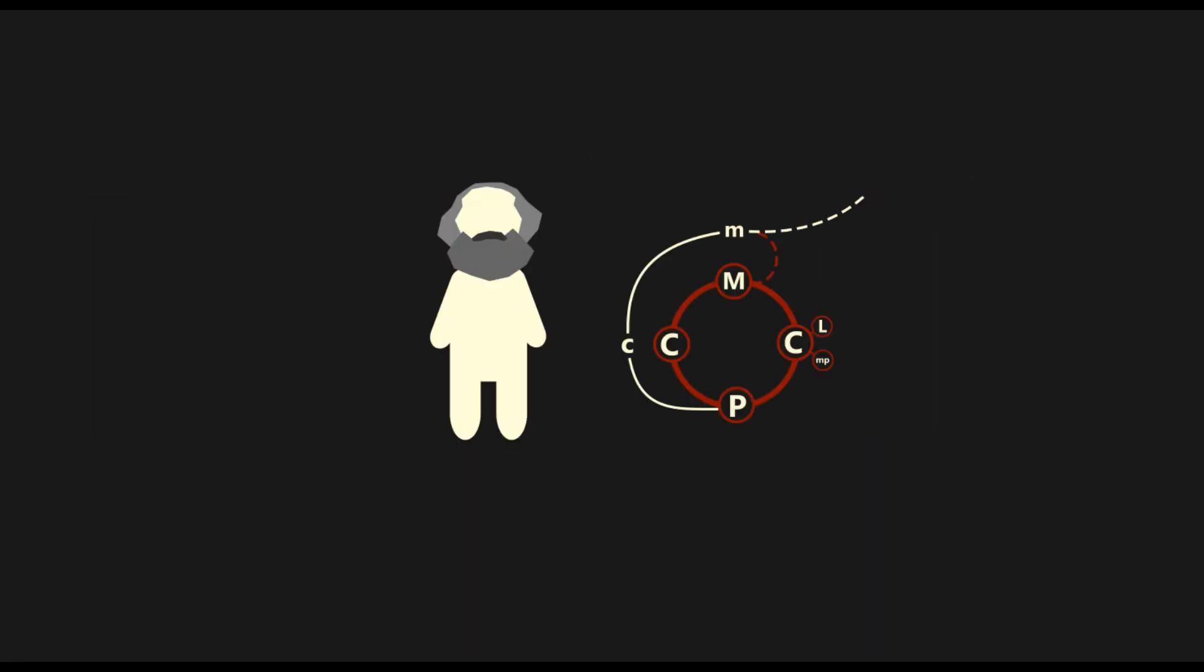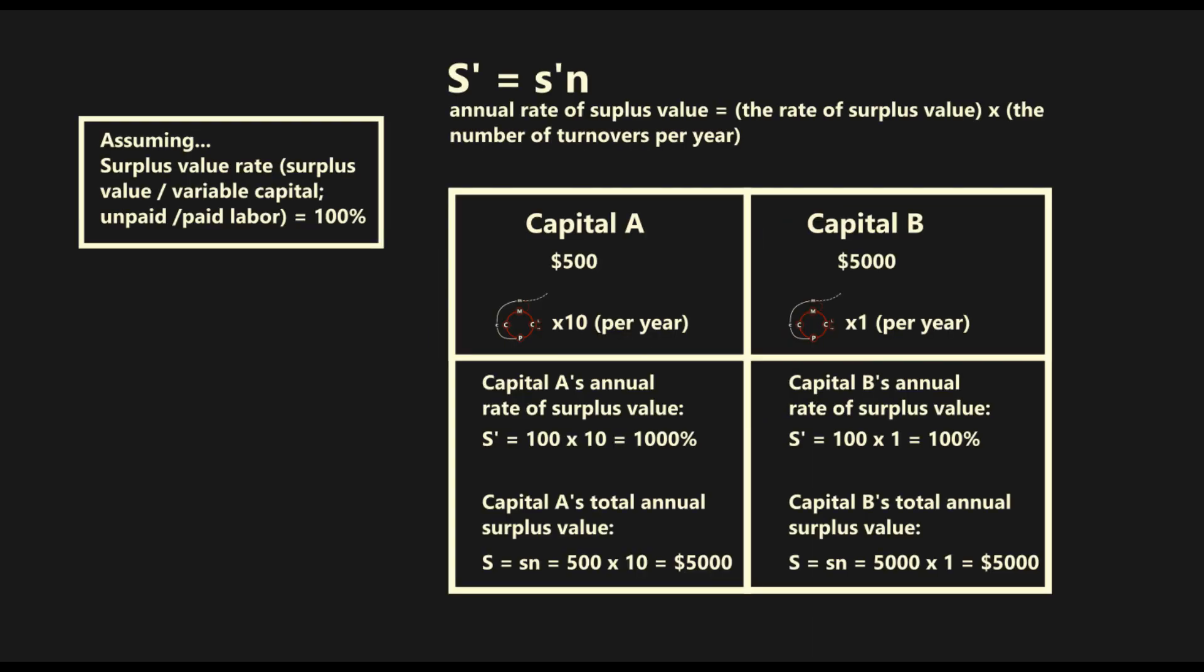From the discussion of turnovers, we can consider another valuable observation. All other variables held constant, enterprises with a higher frequency of turnovers will produce more surplus value over a given period of time. Marx shows us this in his exploration of the turnover of variable capital. In these scenarios, Marx abstracts away constant capital as it has no effect on the rate of surplus value. He also assumes a surplus value rate of 100%.